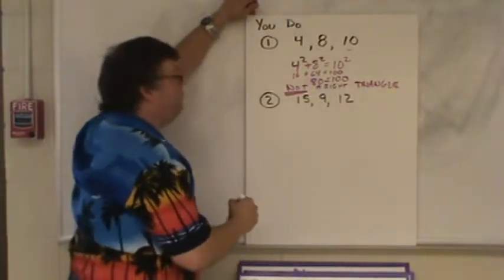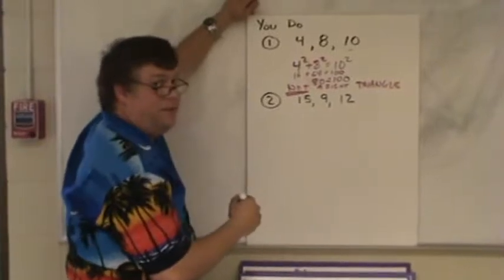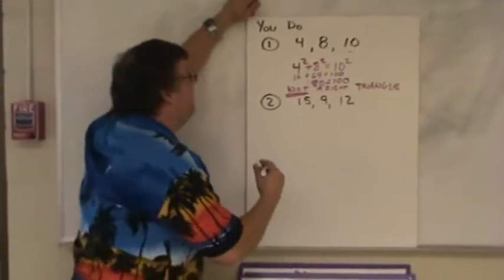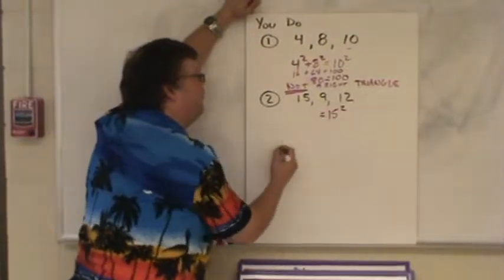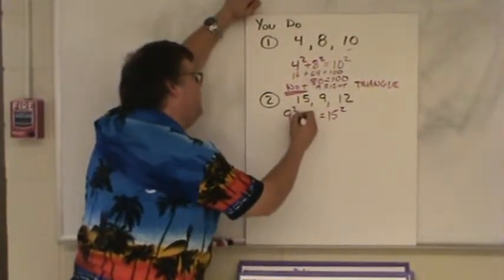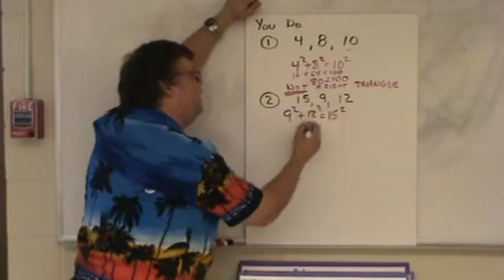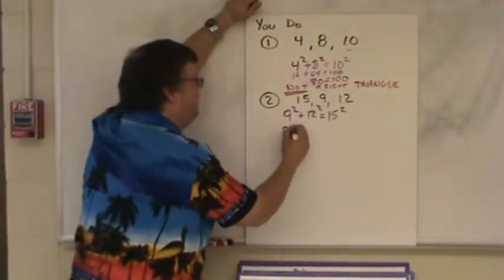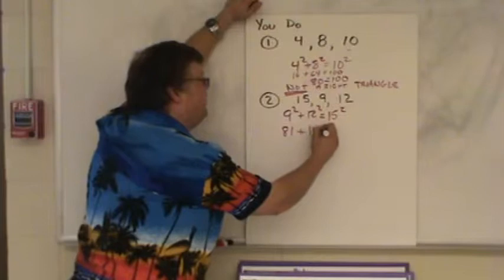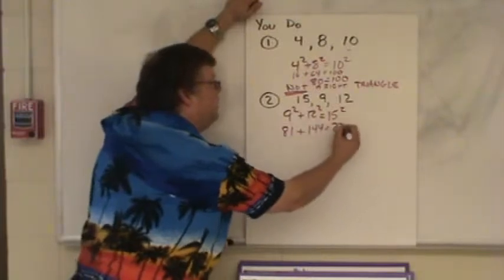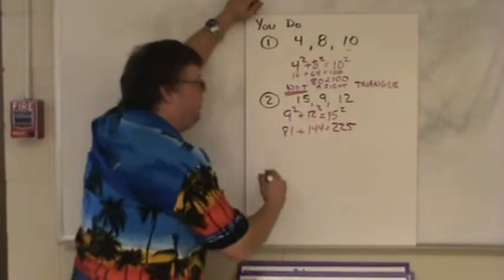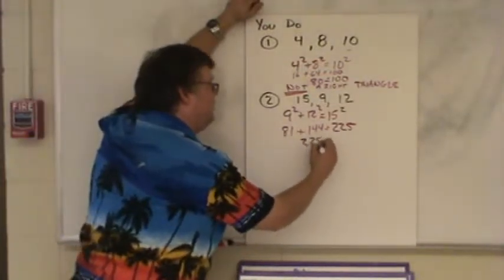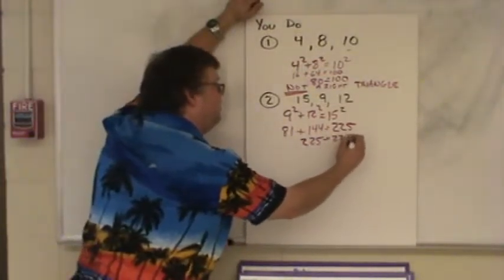Let's look at the last one here. Which one is the largest number? The 15. So the 15 is going to be on one side equal sign by itself being squared. The other side gets the other two numbers, squared and added together. 9 squared is 81. 12 squared is 144. 15 squared is 225.